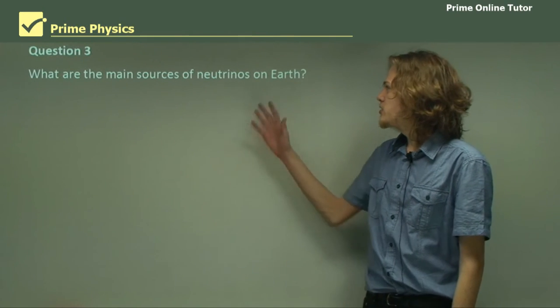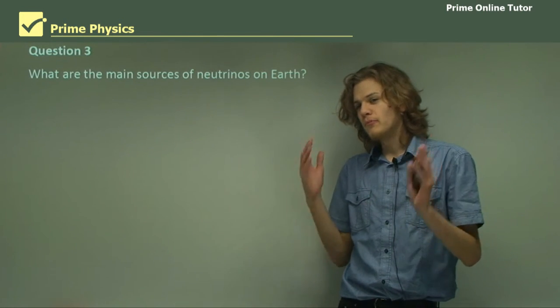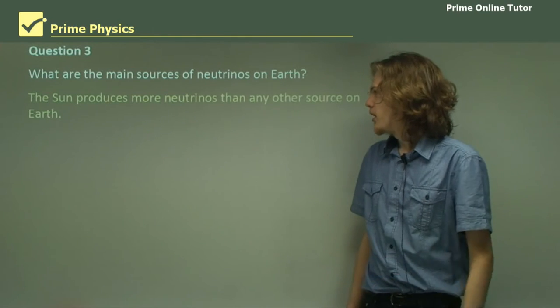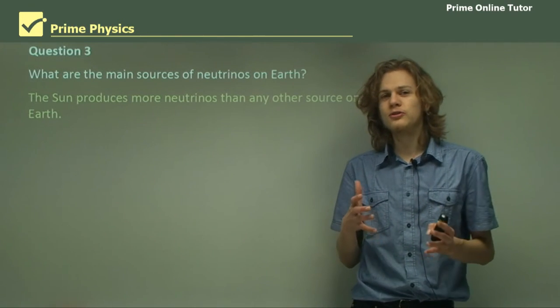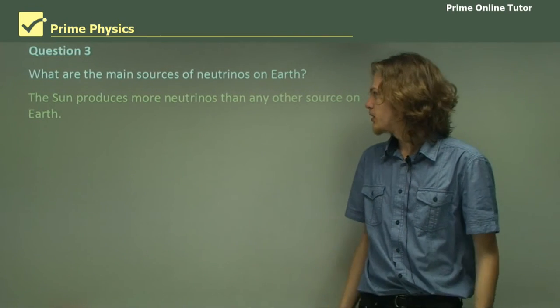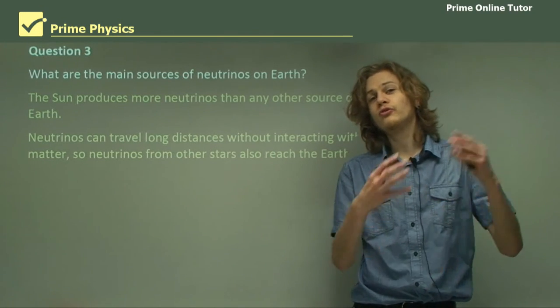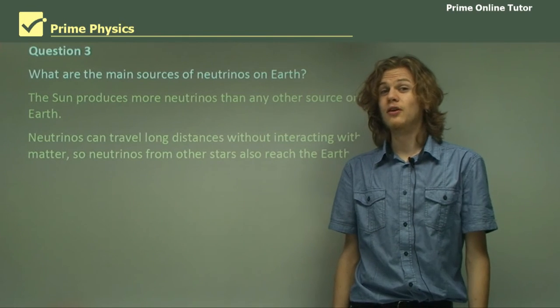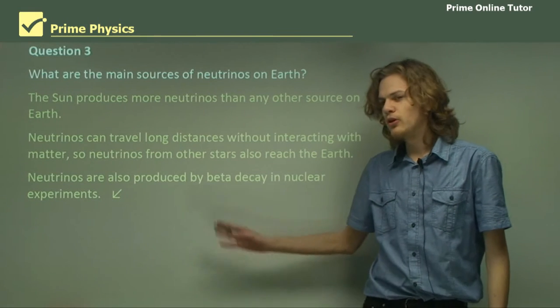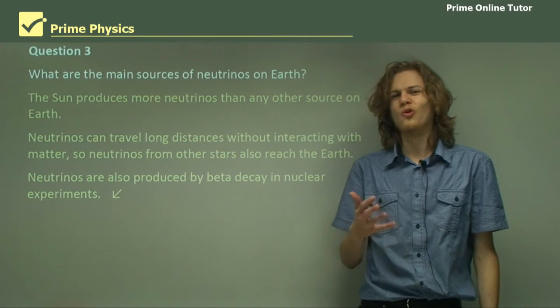Question three: what are the main sources of the neutrinos that reach Earth? The main source is not in fact experiments done in labs, but the Sun. The Sun during nuclear fusion produces huge amounts of neutrinos, billions and billions of billions. As well as this, we can also get extrasolar neutrinos from other stars, most notably when the stars get very bright, for example during a supernova. And finally, we also get a small amount from beta decays.